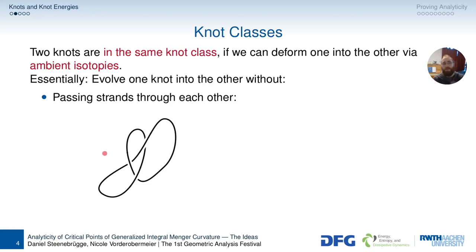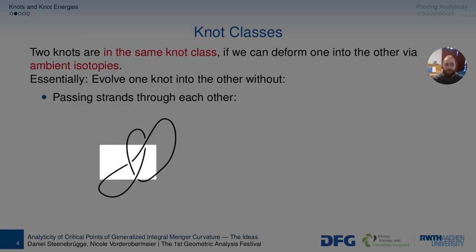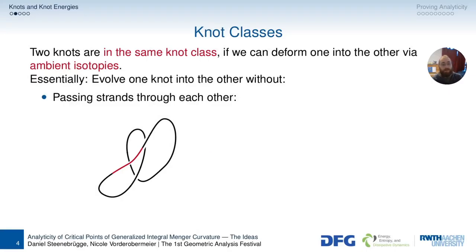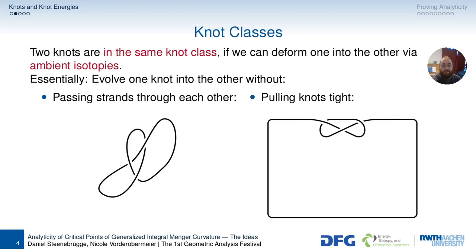And ambient isotopies are not allowed to do two things, so I'm not going to define this rigorously, just give a rough idea. Firstly, I want to evolve one knot into the other without passing strands through each other. Well, I always want to evolve one knot into the other, but I'm not allowed to do two things. First of which is passing strands through each other.